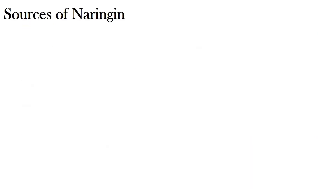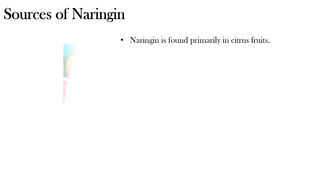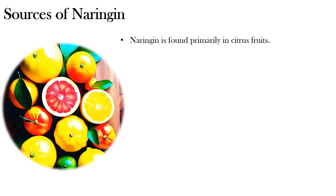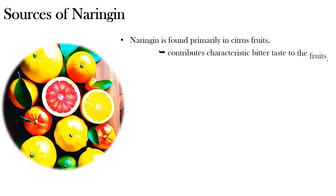Sources of Naringenin. As discussed, Naringenin is found primarily in citrus fruit, where it contributes a characteristic bitter taste to the fruit.